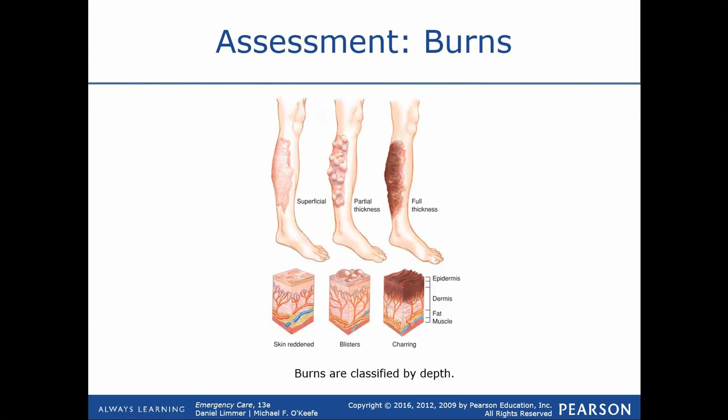Generally speaking, there are three different burn thicknesses. Superficial burns are similar to a sunburn. Partial thickness — also referred to as a second-degree burn — is where we start to get blistering, involving both the epidermis and dermis layers. Many of us have probably had partial thickness burns from cooking with hot oil or even really bad sunburns that cause blisters — those are all examples of second-degree burns.